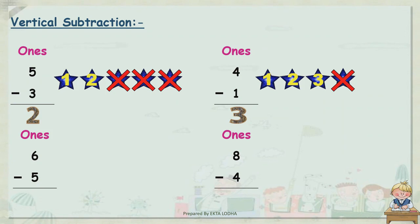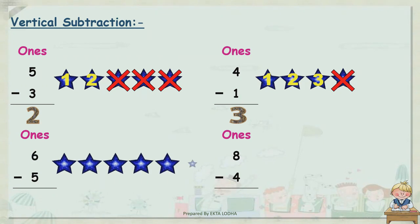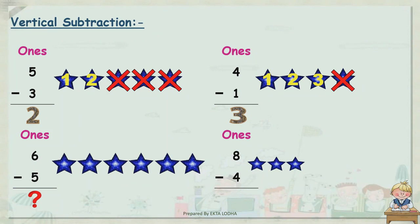Now let's see another one: 6 minus 5. There are 6 stars — 1, 2, 3, 4, 5, and 6. Kids, you have to subtract 5 stars from these 6 stars, and this is your homework. Next one: 8 minus 4. Count: 1, 2, 3, 4, 5, 6, 7, and 8. You have to subtract 4 stars — try it at home. Let's proceed further.